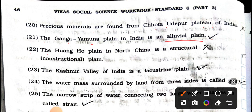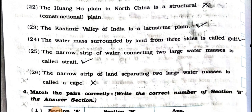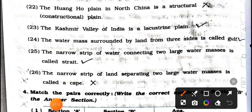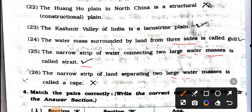Number 20: Precious minerals are found from the Chota Udaypur Plateau of India. False. Number 21: The Ganga-Yamuna Plain in India is an alluvial plain. True. Number 22: The Heng Ho Plain in North China is a structural constructional plain. False. Number 23: The Kashmir Valley of India is a lacustrine plain. True. Number 24: The water mass surrounded by land from three sides is called a gulf. True. Number 25: The narrow strip of water connecting two large water masses is called a strait. True. Number 26: The narrow strip of land separating two large water masses is called a cape. False.